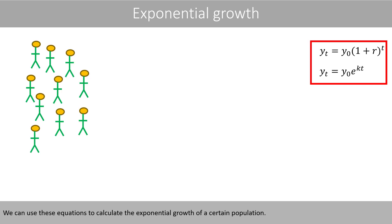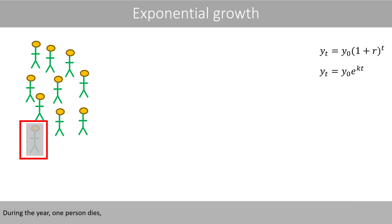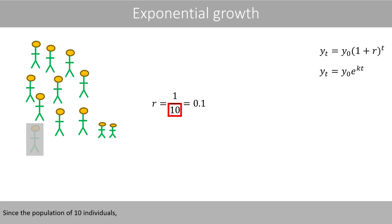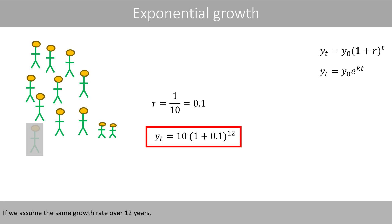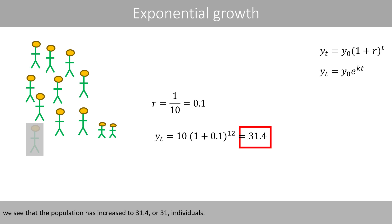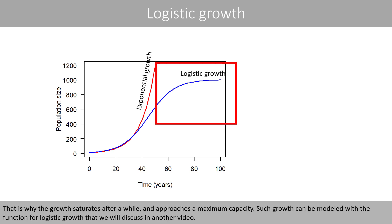We can use these equations to calculate the exponential growth of a certain population. Suppose that we have a population of 10 individuals. During the year, one person dies and two new babies are born. Since the population of 10 individuals increases by one person during the year, the growth rate is 10%. If we assume the same growth rate over 12 years, the population has increased to about 31 individuals. However, the population cannot grow forever, because there will not be enough food or space. This is why the growth saturates and approaches a maximum capacity — such growth can be modeled with a logistic growth function, which we will discuss in another video.